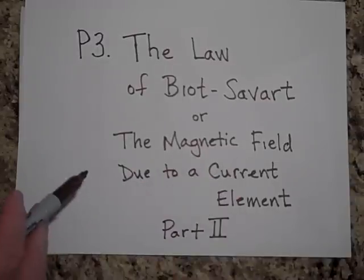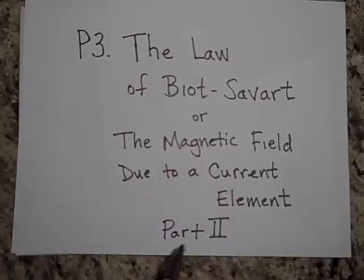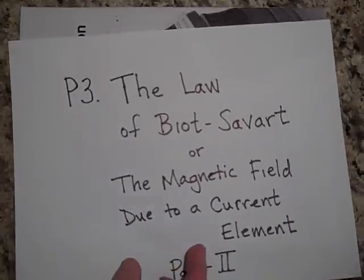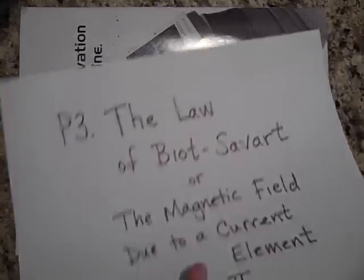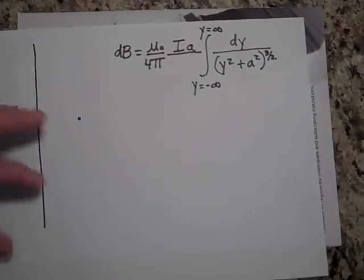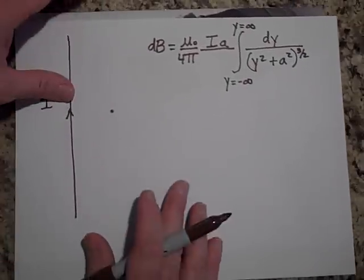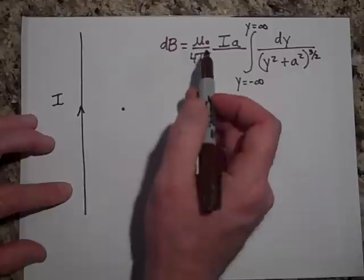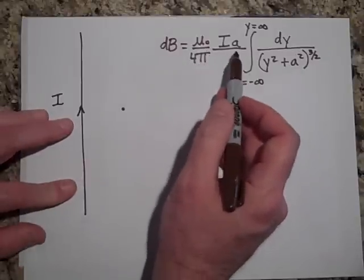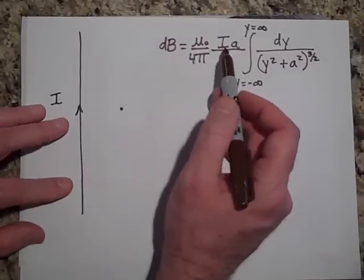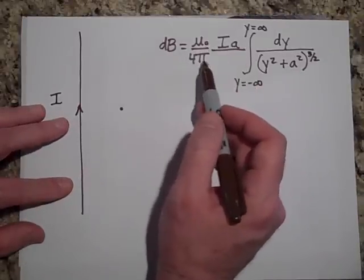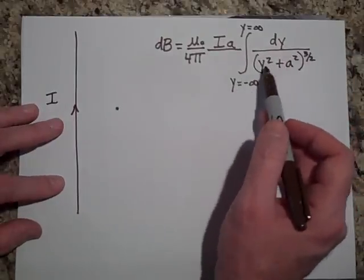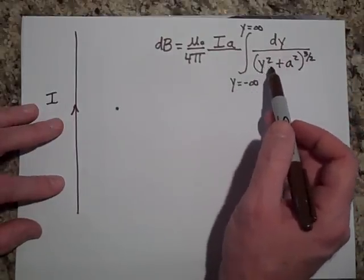This is the law of Biot-Savart part 2. We finished the last one and I had this integral with all these constants in front: μ₀, I, a over 4π, and I'm trying to take the integral of dy over (y² + a²) to the 3/2 power.